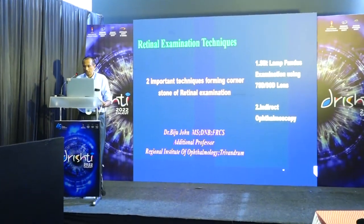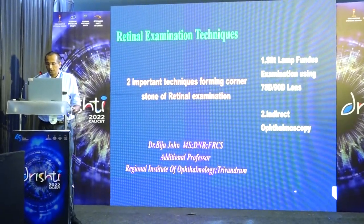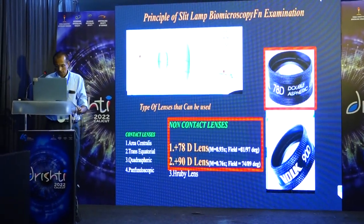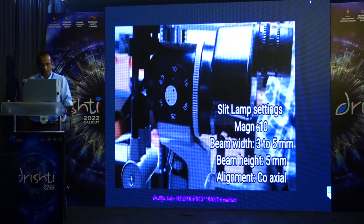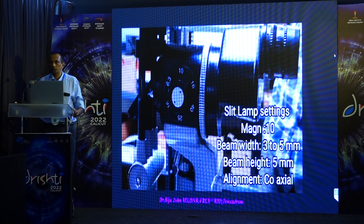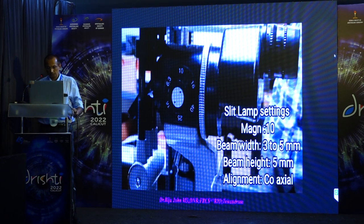Next, Dr. BJ John will talk about indirect ophthalmoscopy and slit lamp biomicroscopy. These are two very important basic examination techniques for the retina: one is slit lamp fundus examination using either the 78D or 90D lens, and the second is indirect ophthalmoscopy. The choice of lens depends on personal preference — retinal surgeons generally prefer 78D, glaucoma people prefer 90D.